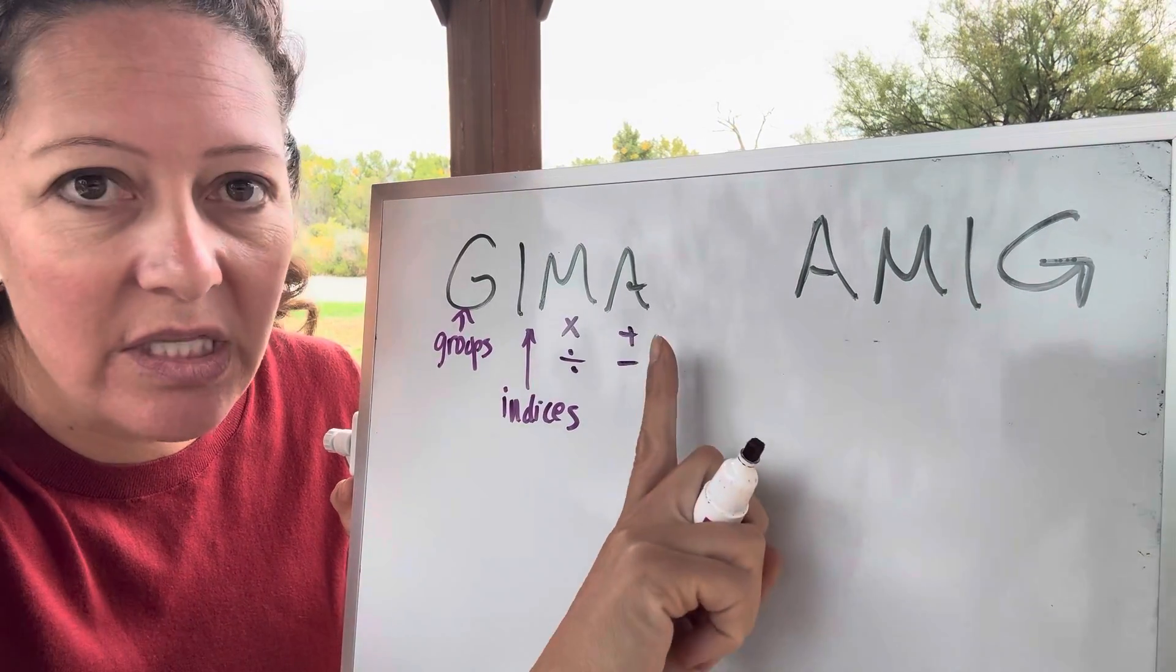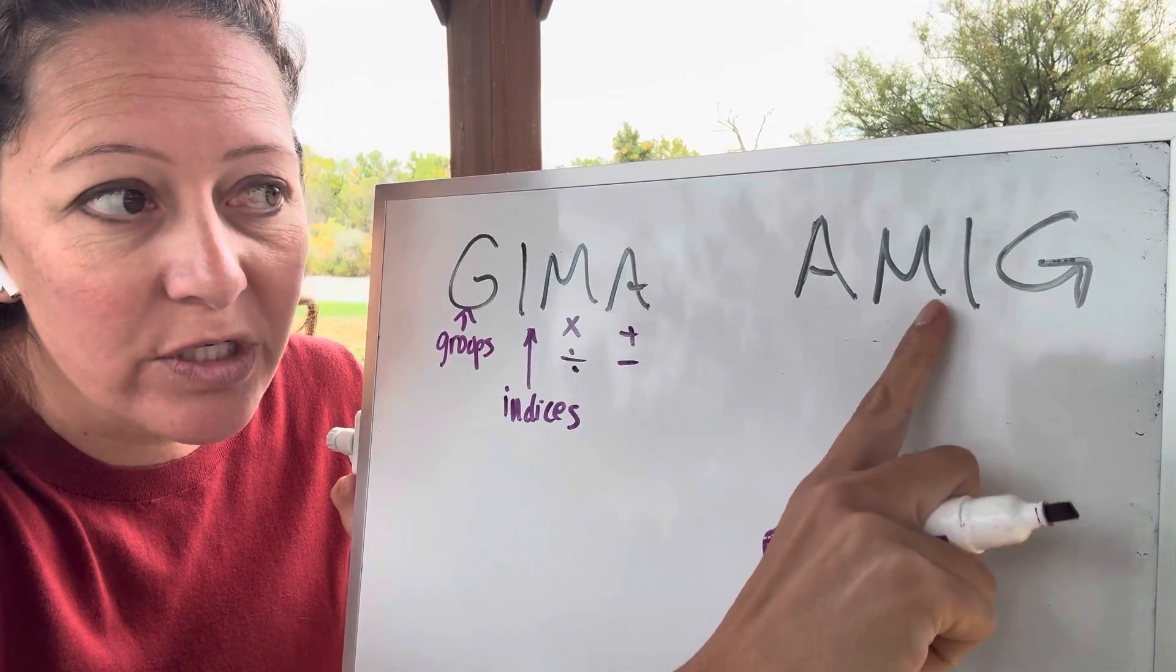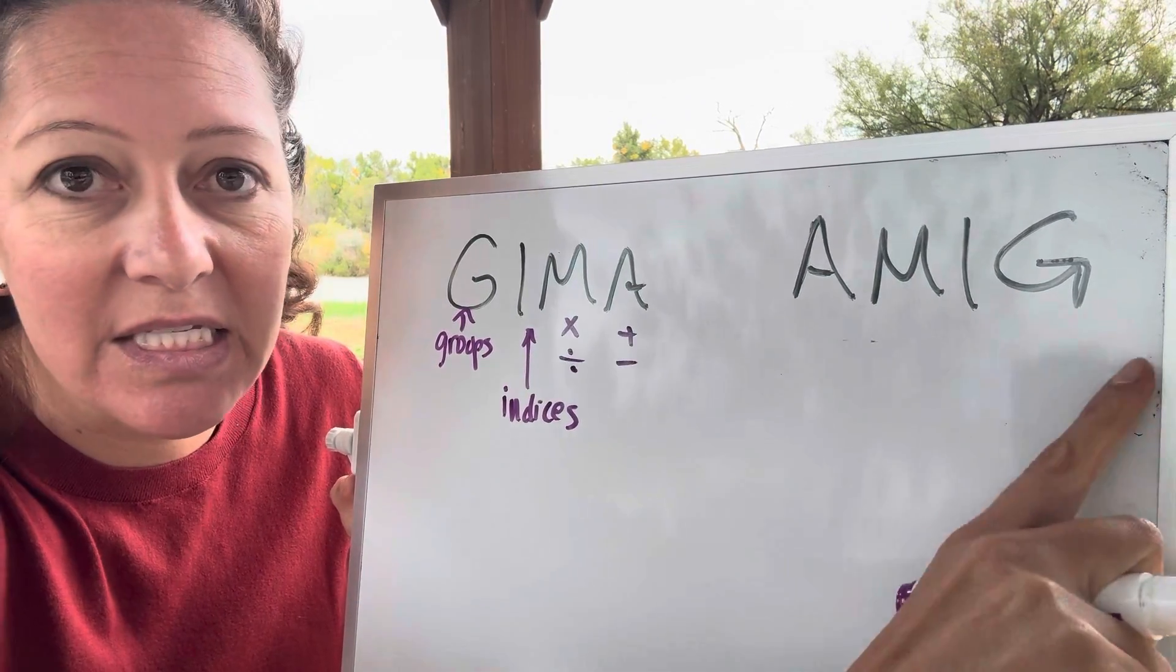And then AMIG is just the opposite. So it's the addition, subtraction first, multiplication, division next, the indices, and then the groups.